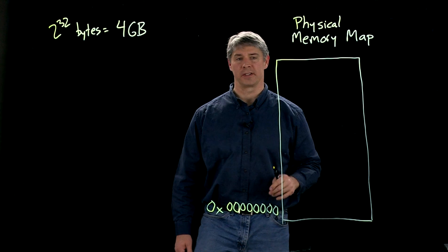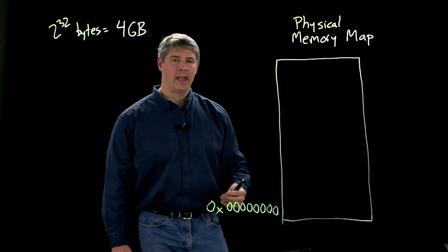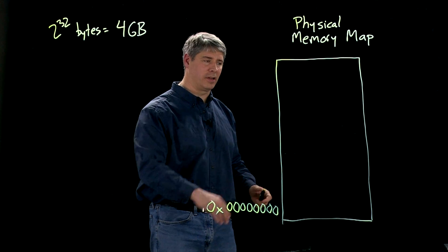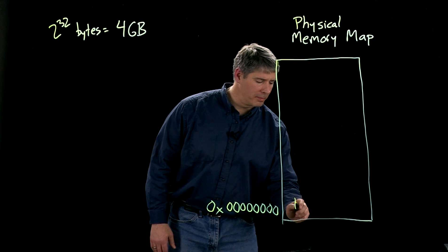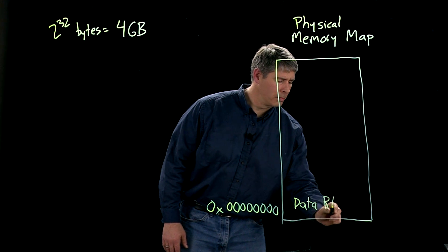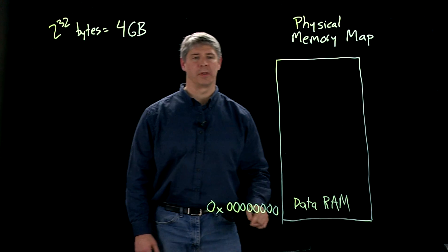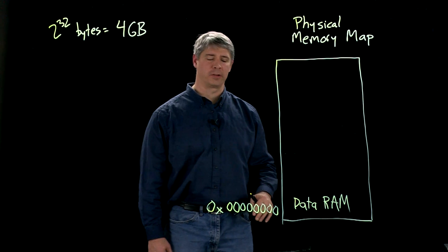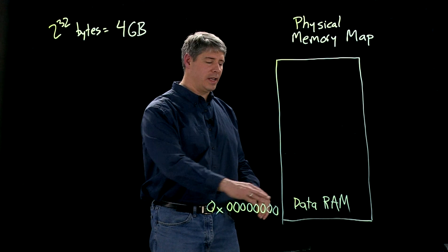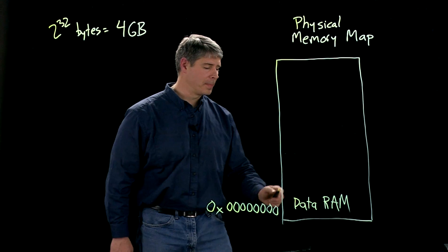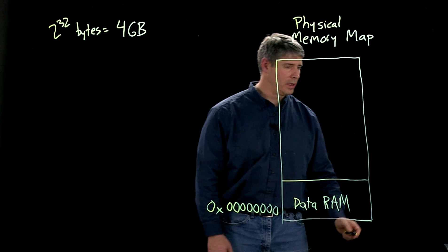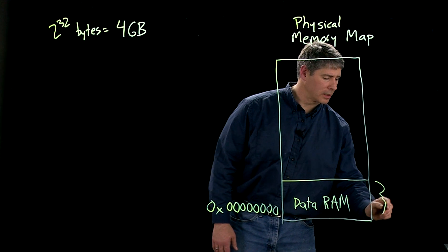This is the first address in our physical memory map. For the PIC32, what lives at address 0 and larger is data RAM. When there's an address on the bus referring to an address just a little bit larger than 0, it's accessing data RAM. The actual size of the data RAM on our PIC32 is 128 kilobytes.